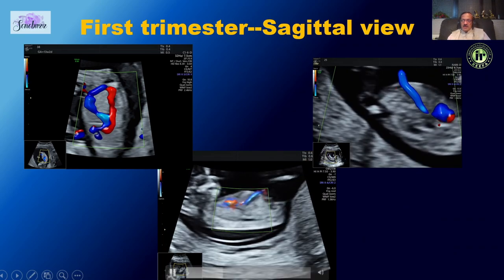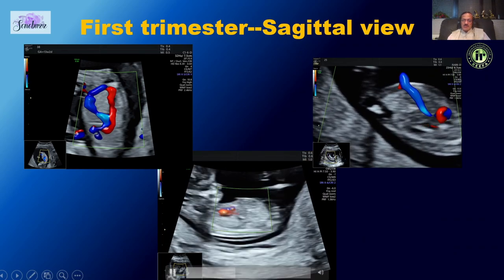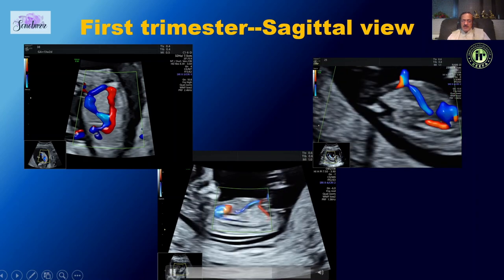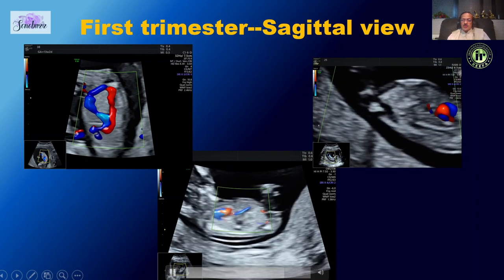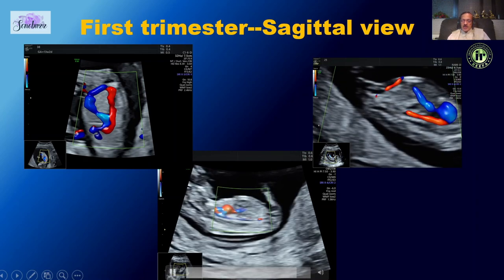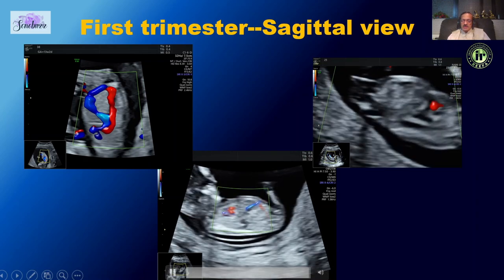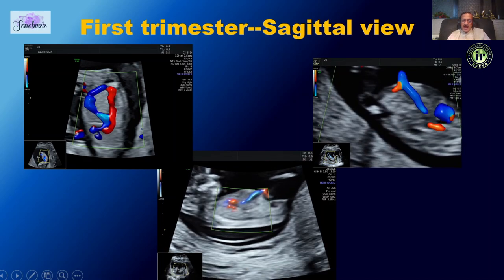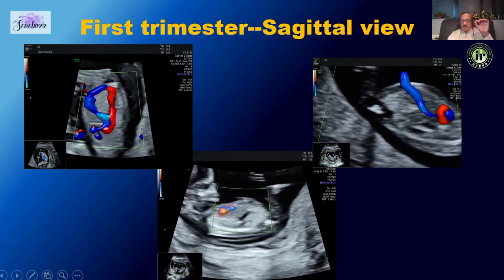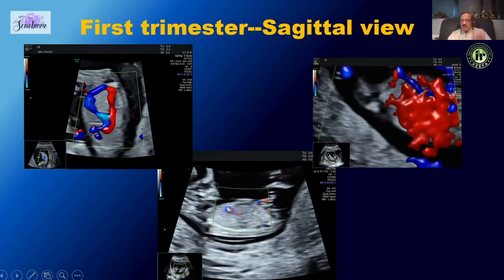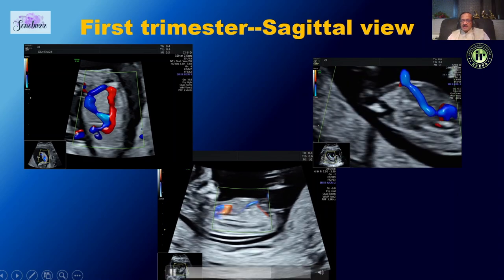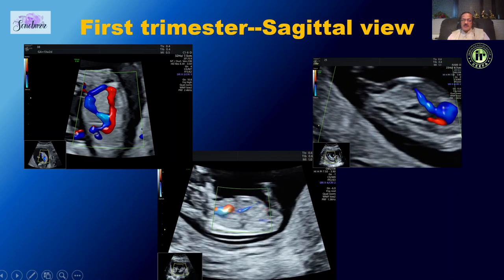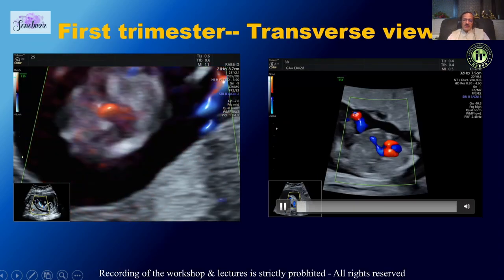The ductus venosus can be assessed in both the sagittal plane and the transverse plane. Here are three examples of the sagittal plane. It is easy to identify because it is the area where the umbilical vein suddenly becomes narrow — it forms a small triangle — and importantly at that point you see aliasing due to high velocities.